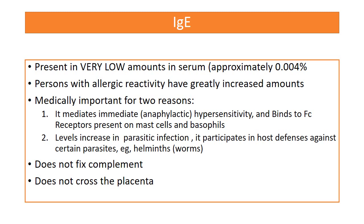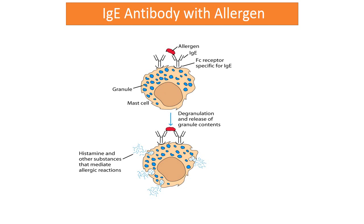IgE is present in very low amounts in the serum, except in persons with type 1 hypersensitivity (allergy) or parasitic infection, as it has receptors for mast cells and basophils. IgE mediates type 1 hypersensitivity: the Fc constant portion of IgE has receptors for mast cells, and when an allergen or antigen attaches to the variable region, the mast cells degranulate and release histamine and other allergic mediators, causing atopy or type 1 hypersensitivity.